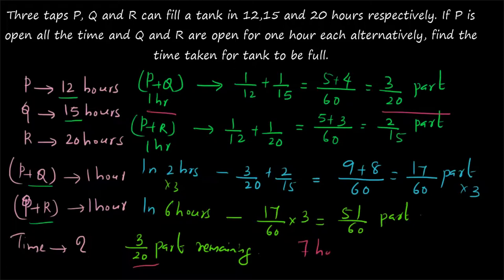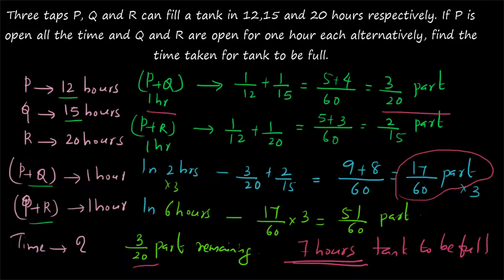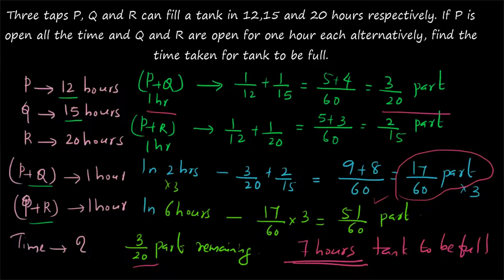So one more hour will be taken, making six plus one equal to seven hours total time for the tank to be full. To summarize: in two hours 17/60 part is filled; multiplying by three gives 51/60 in six hours; the remaining 3/20 part is filled by P plus Q in one more hour. Therefore the total time is seven hours.